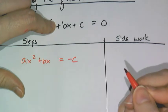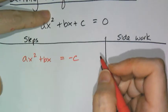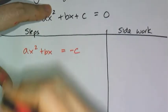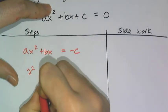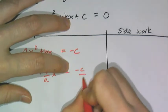And then of course you need to get one x squared because when we complete the square we want one x squared. So I have to divide by a. So I get x squared plus b over ax equals negative c over a.